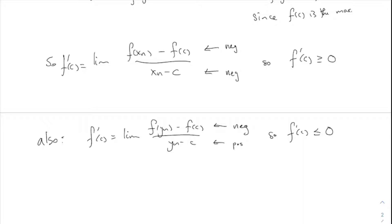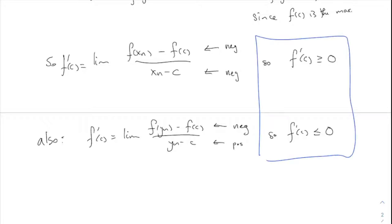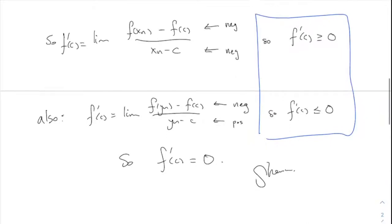Put it together. From the XN sequence we got F prime of C is greater than or equal to zero, and from the YN sequence we got F prime of C is less than or equal to zero. Together, that means F prime of C must equal zero. And that was our job — to show F prime of C equals zero.